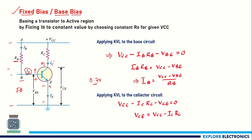We also have two more parameters: the collector current IC and the voltage VCE. Applying KVL to the collector circuit — from VCC through the collector to ground — we get: VCC − IC·RC − VCE = 0. From this, VCE = VCC − IC·RC.